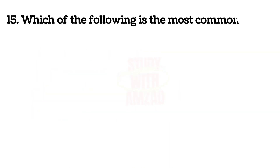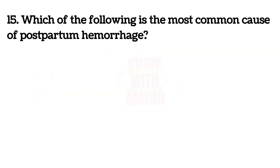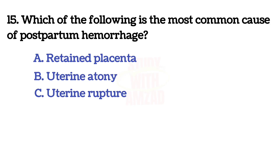Which is the most common cause of postpartum hemorrhage? The correct answer is B: Uterine atony.